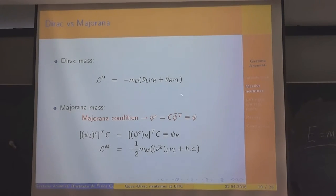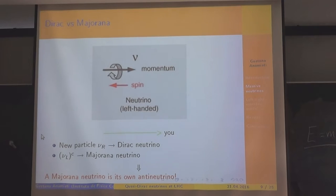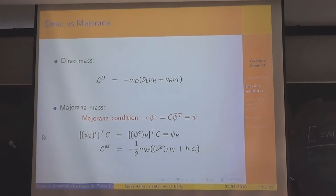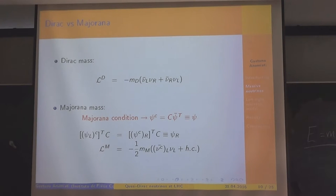From the Majorana condition, you can see that what is written here is exactly a right-handed object. C stands for charge conjugation; this C is a matrix whose form depends on the representation you are using. This is the Majorana mass term.